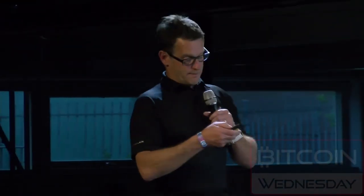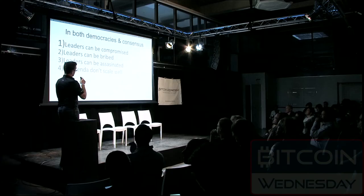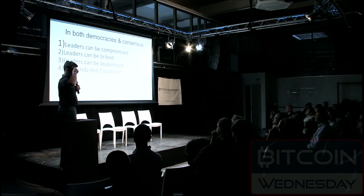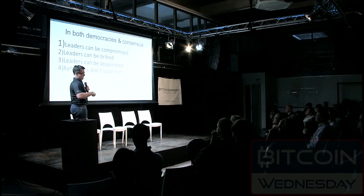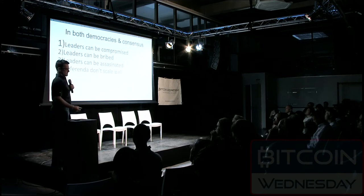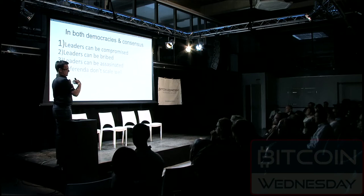Contrast that with a direct democratic model — Switzerland, or California in the US — where rather than electing leaders, citizens are asked to vote directly on the laws that will govern society. In both democracies and consensus, things can go wrong: leaders can be compromised, bribed, or corrupted. All the things that can go wrong with a human system can happen to leader-based consensus.